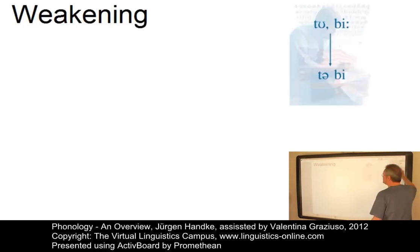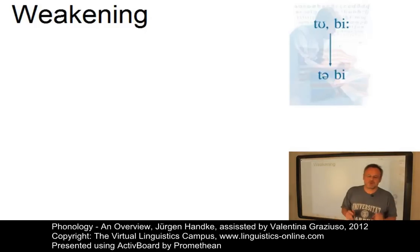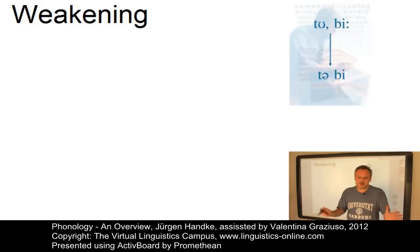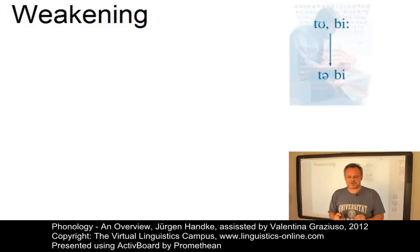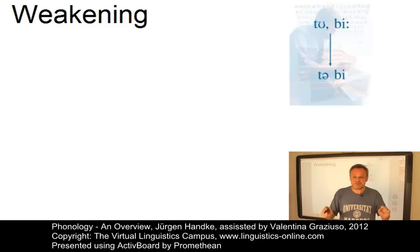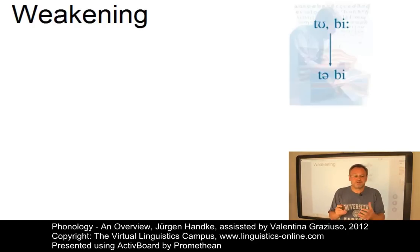Let's look at weakening next. One of the most characteristic features of English phonology is the weakening of vowels — or the centralization of vowels towards the vowel schwa — in unstressed syllables. This affects about four dozen monosyllabic function words which occur very frequently in conversational English. These words have a strong form in stressed position with a fully stressed vowel, or a weak form if they occur in an unstressed position with a weakened vowel or even a syllabic consonant.